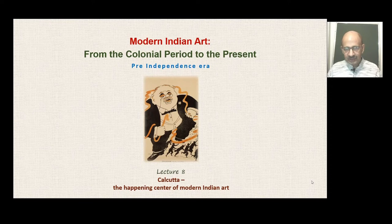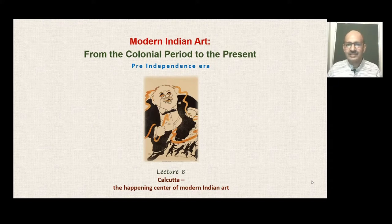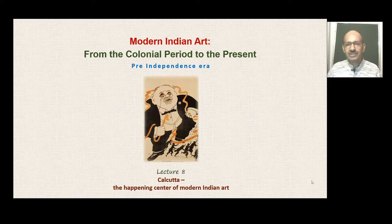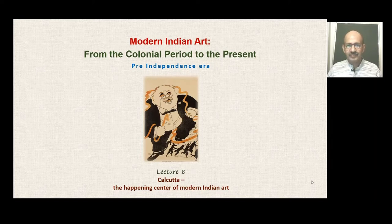We will see what is happening in Calcutta in a scenario which we may loosely term as post-Bengal school. The Bengal school as a form of art and chosen ideology was still there — it didn't just disappear — but simultaneously we see the emergence of a few other trends. This is what we are going to discuss today under the subtitle: Calcutta, the happening center of modern Indian art.